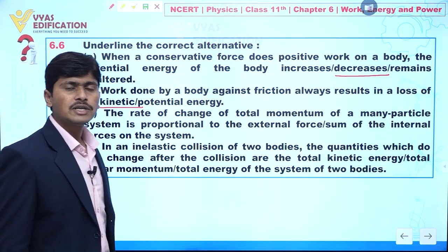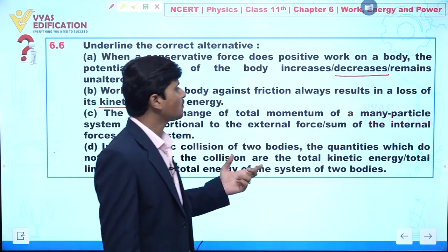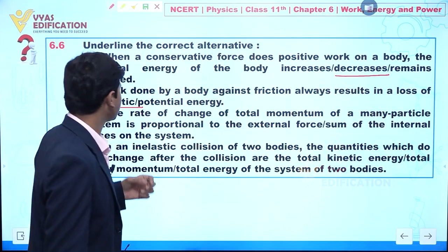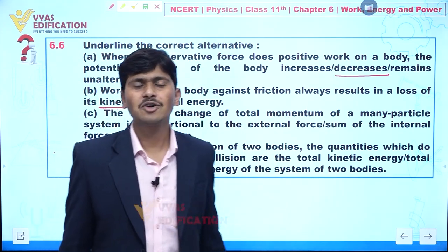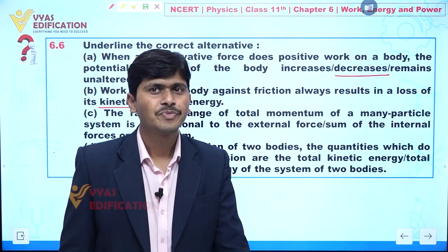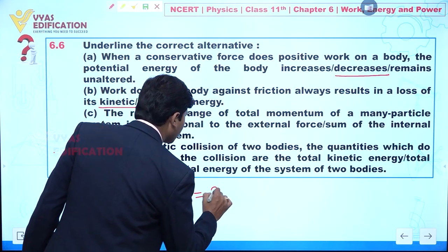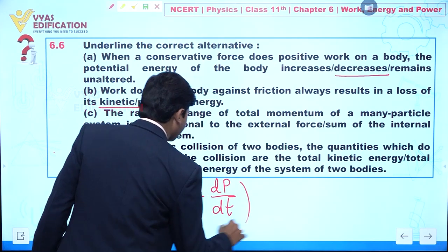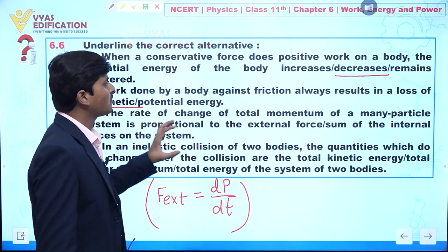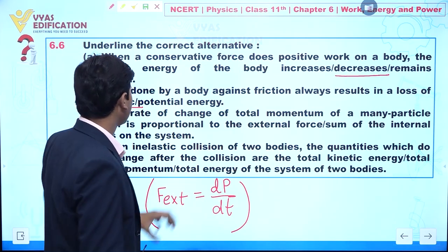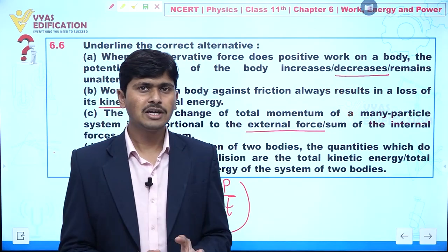Now, part number C: the rate of change of total momentum of a many-particle system is proportional to what? According to Newton's second law of motion, the external force acting on a body is given by the rate of change of momentum. So directly, the rate of change of momentum is proportional to the external force acting on that system.